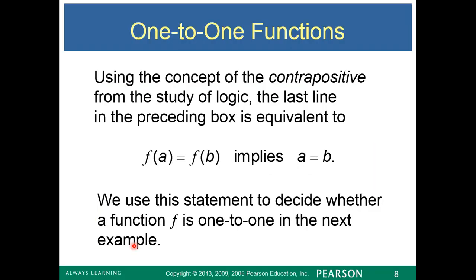Using the concept of the contrapositive from logic, the last line is equivalent to this: if f(a) equals f(b), it implies that a must equal b. If a is not equal to b, that implies f(a) is not equal to f(b). We use this statement to decide whether a function is one-to-one. If f(a) equals f(b) implies a equals b for all a and b, then it's a one-to-one function.